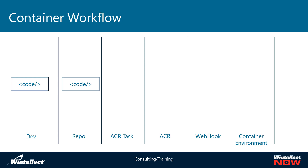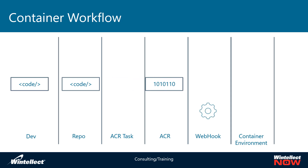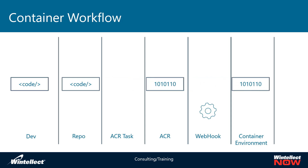The ACR task pulls the code from the repository and builds a Docker image from it. Once that Docker image is built, it is pushed into ACR, which then calls a webhook. That webhook tells the container environment to pull that image and run it as a container.